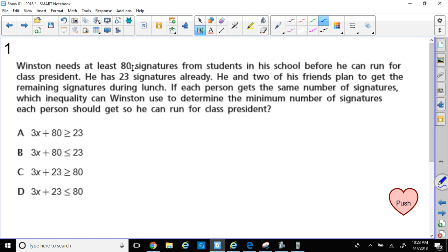Winston needs at least 80 signatures from students in his school before he can run for class president. So he needs at least 80 signatures. That's important. He has 23 signatures already. He and two of his friends plan to get the remaining signatures during lunch. If each person gets the same number of signatures, which inequality can Winston use to determine the minimum number of signatures each person should get so he can run for class president? Alright, so remember we got to do a little text coding. So let's underline what's important.